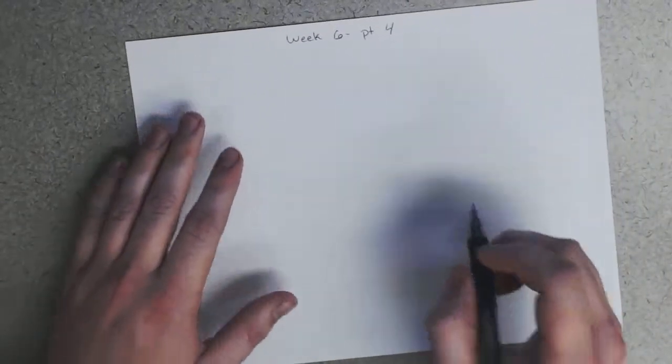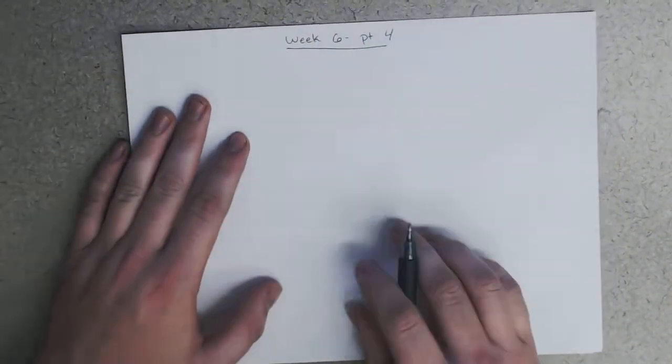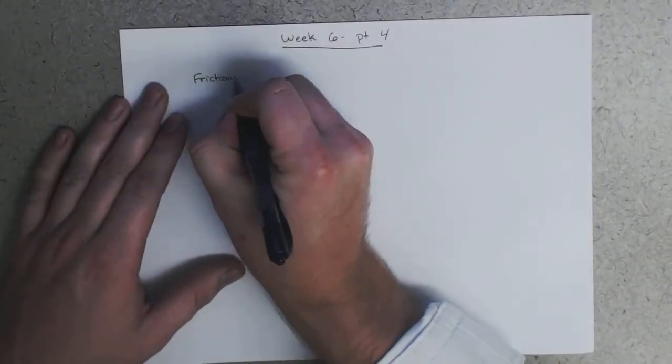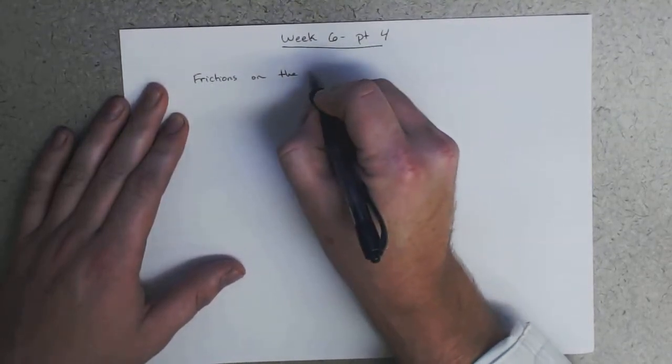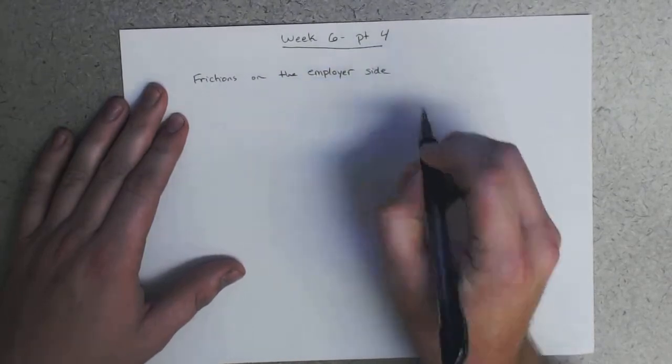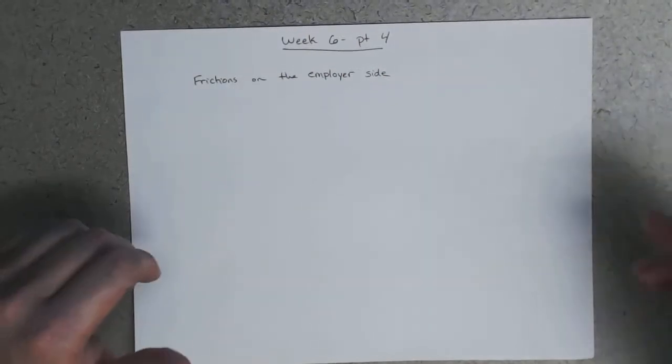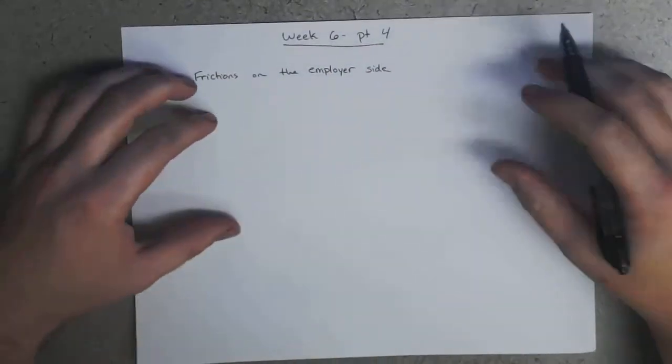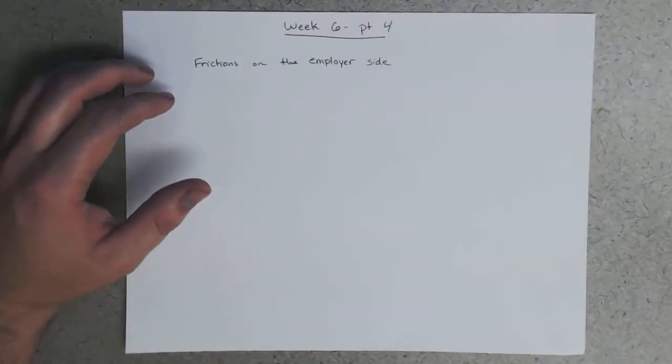Okay, so just like there were frictions on the employee side, there's also going to be frictions on the employer side. Okay, so in the case of employees, we have frictions in the labor market on the employer side. And a simplistic view is that the cost of hiring an additional worker is just the wage that the additional worker is paid. But it turns out this isn't really the only cost. There's actually more costs to this than just that.